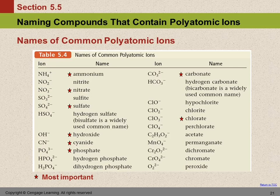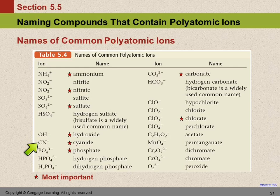A lot of these end in -ate or -ite. There are only a couple that end in -ide. Monatomic anions like chloride, fluoride, bromide, and oxide all end in -ide. Two polyatomic ions that might be confusing: OH minus is hydroxide, and CN minus is cyanide. But all the others end in -te — either -ate or -ite. Most of the ones in the table have a T in them, if that helps.